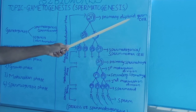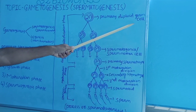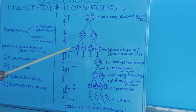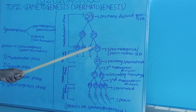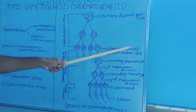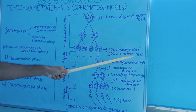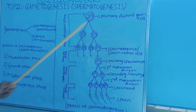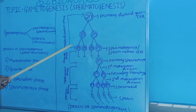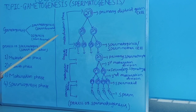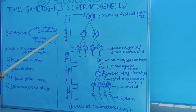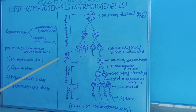In the multiplication phase, the primary diploid germ cell undergoes repeated mitotic division and forms Spermatogonia, or sperm mother cells, which contain the diploid number of chromosomes. After the completion of the multiplication phase, the growth phase starts.